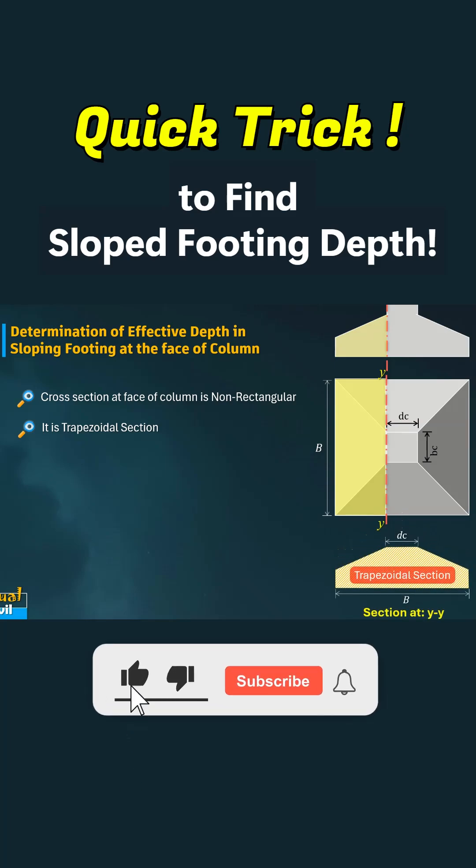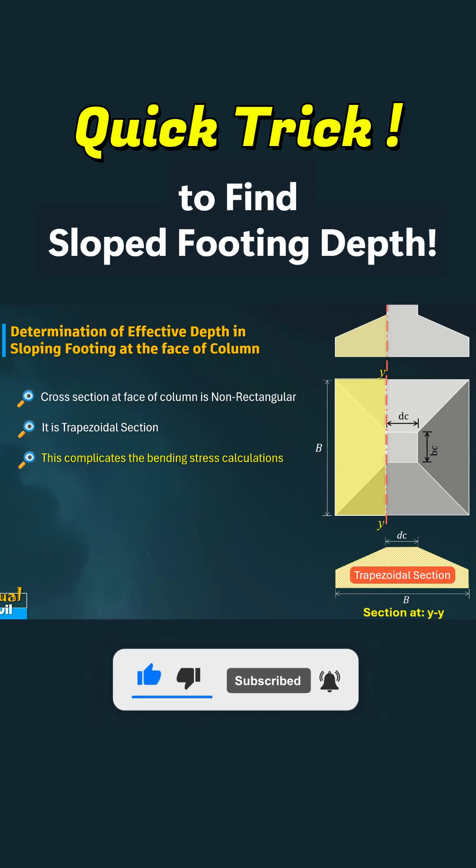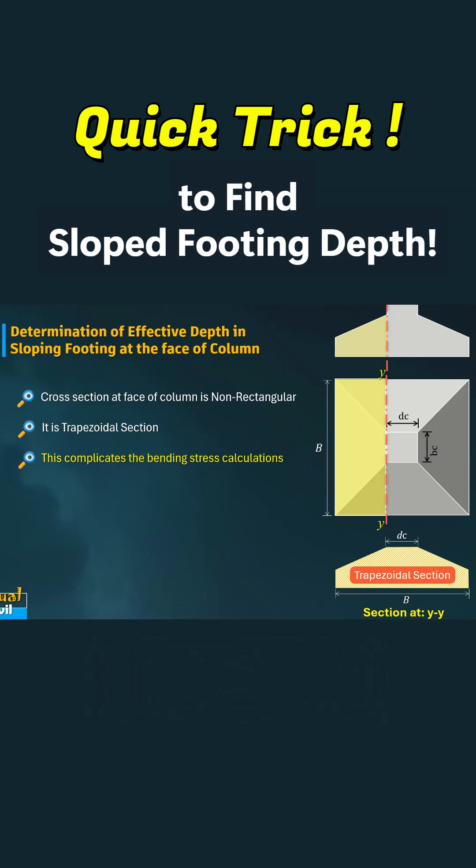This geometry complicates the calculation of bending stress because it depends on the moment of inertia of a non-rectangular section. To simplify the design process, engineers often refer to two practical methods found in the literature: first, equivalent width method and second, top width method.